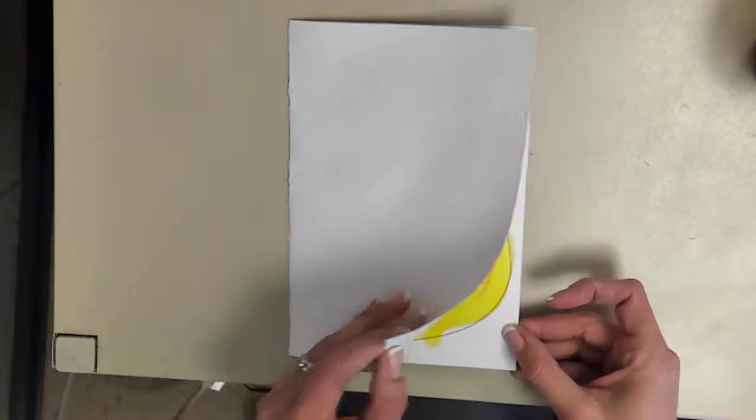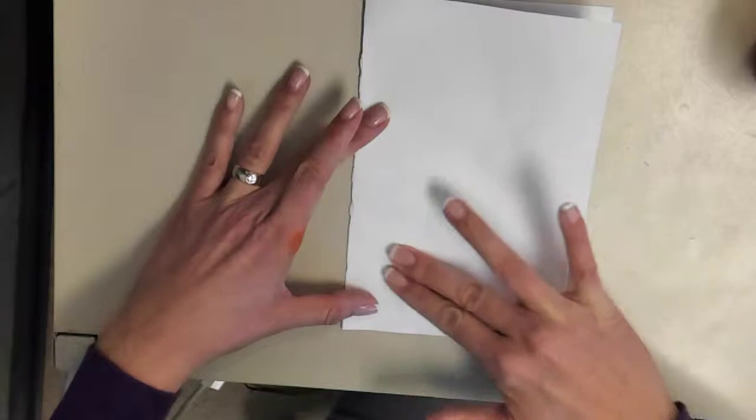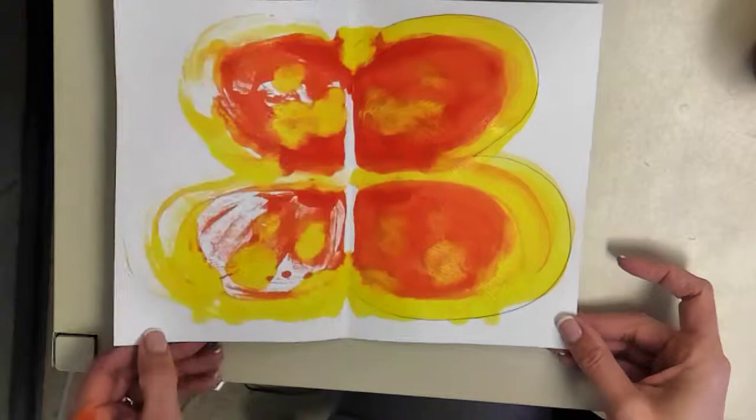Now if you don't like an area like this you can go back over and just make sure you rub a little bit harder on that spot. Remember prints aren't going to be an exact replica, so it's all right if you have some white.